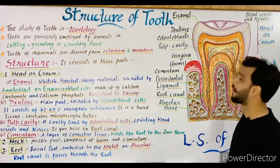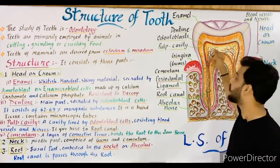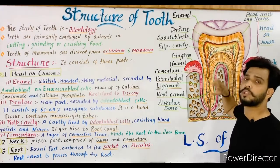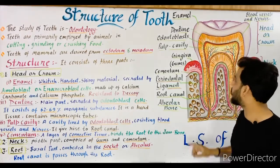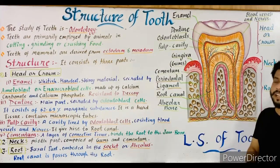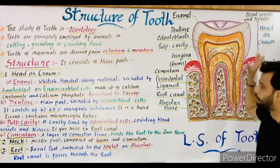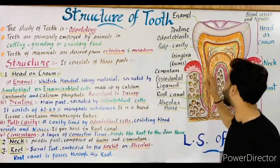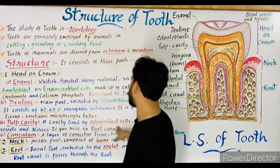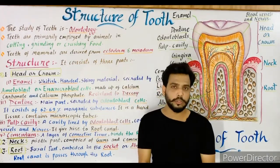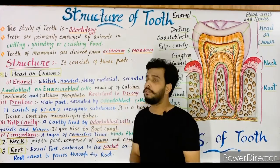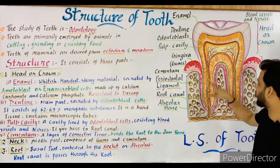Below the dentine is a hollow cavity known as the pulp cavity, situated at the middle of the tooth. It is responsible for oxygen and blood supply to the tooth through a network of blood vessels and nerves. The pulp cavity is lined by odontoblast cells and consists of blood vessels and neurons.